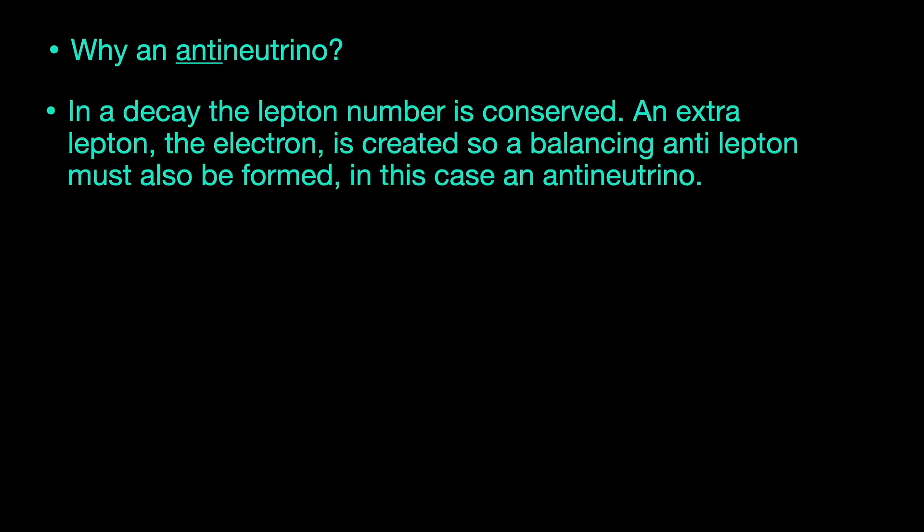But why an anti-neutrino? Well that's because in a decay the lepton number is conserved. Now an electron is a lepton and this has been newly produced. To balance it there must be an anti-particle.